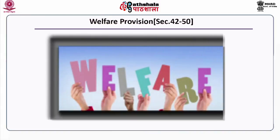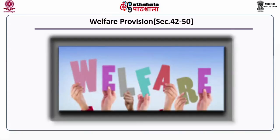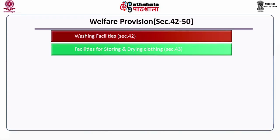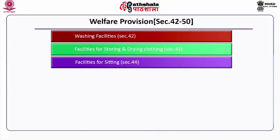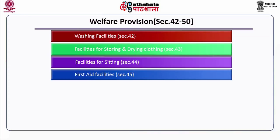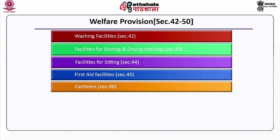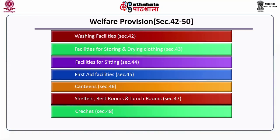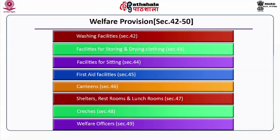Chapter 5 covers welfare provisions under Sections 42 to 50. Under Section 42, washing facilities must be provided. Under Section 43, facilities for storing and drying clothes must be provided. Under Section 44, facilities for sitting must be made available. Section 45 requires first aid appliances. Section 46 requires a canteen facility. Section 47 requires shelter, restroom and lunch room provisions. Section 48 requires a crèche facility. Section 49 concerns welfare officers.